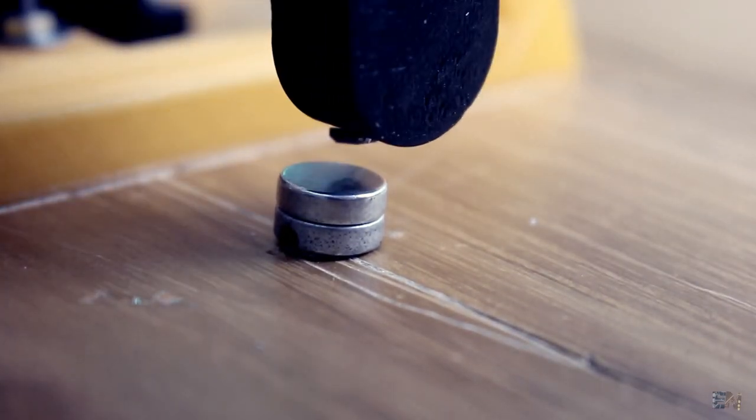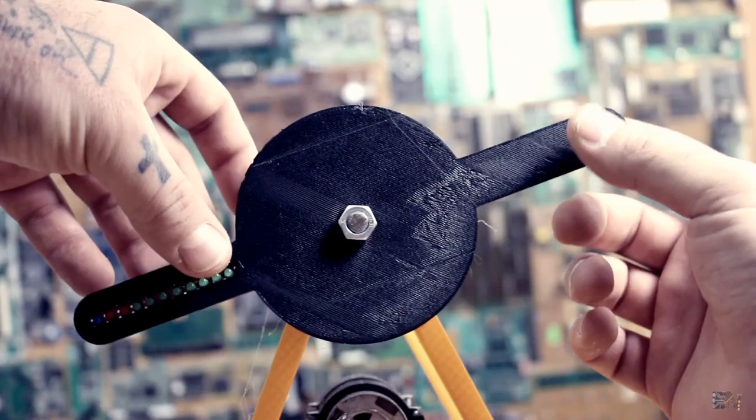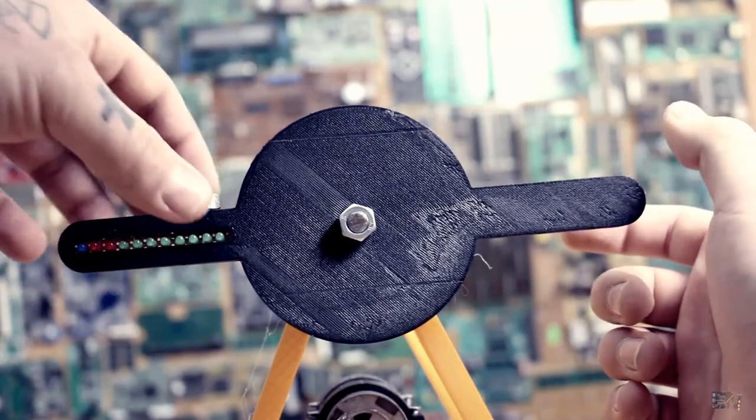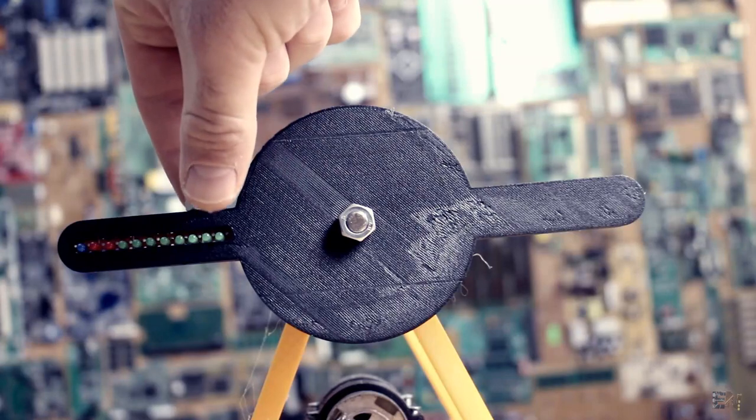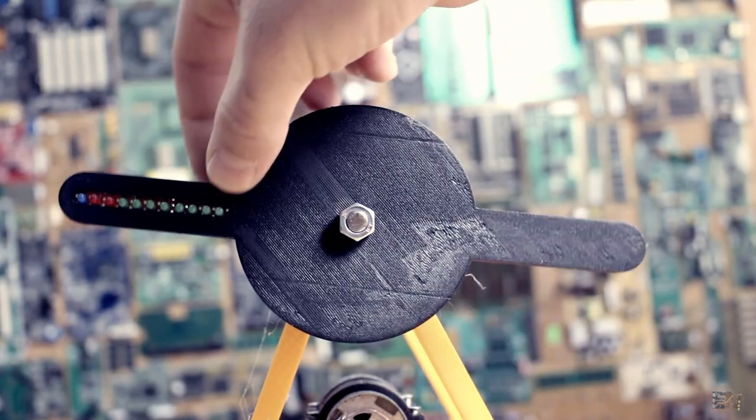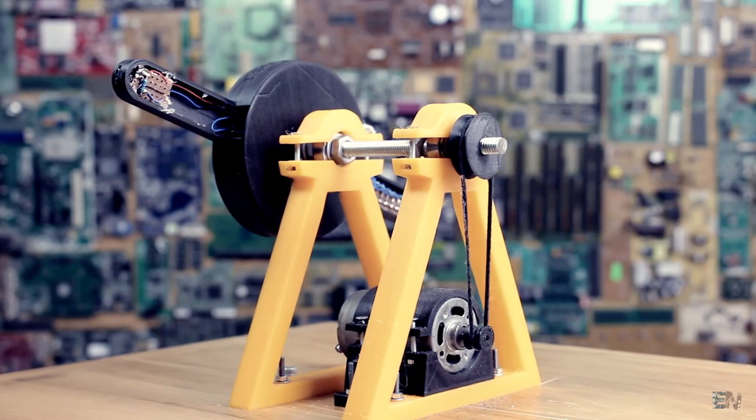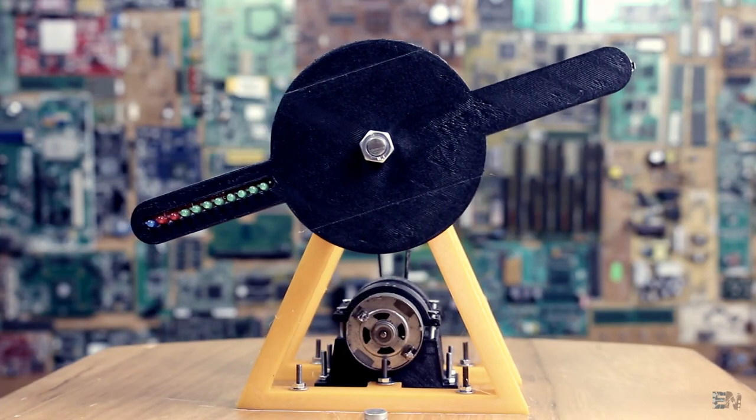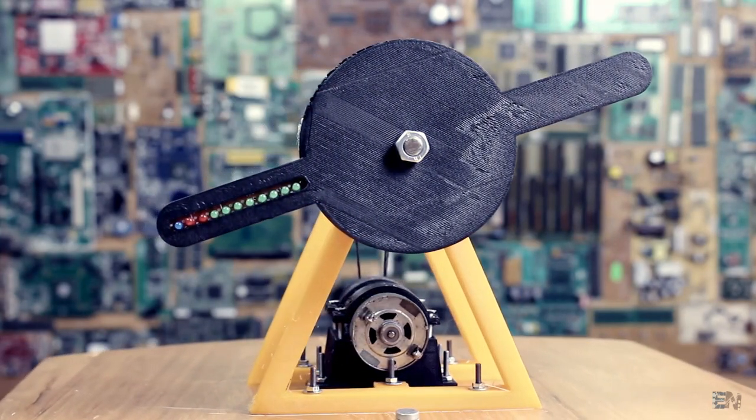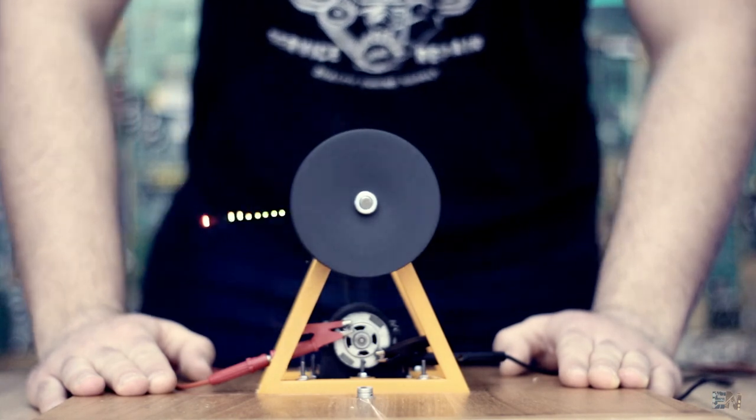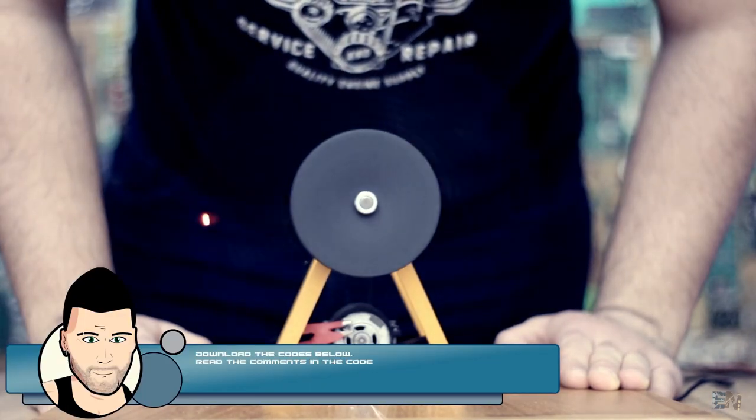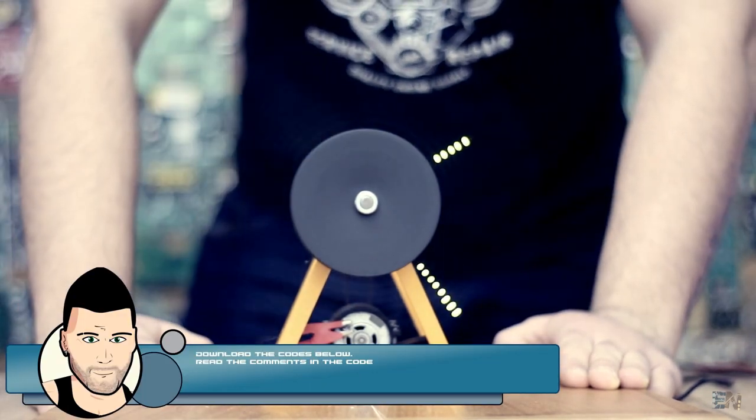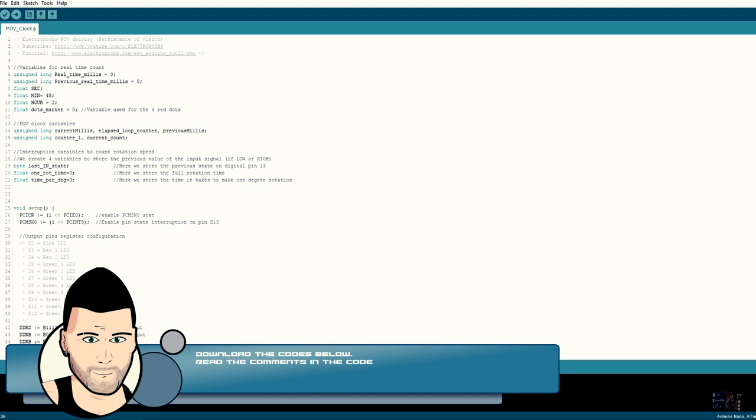Before we look over the code, we have to make sure that the propeller is balanced. Without touching the propeller, it should always be as horizontal as possible. OK, so this is the finished POV clock with the code already uploaded to the Arduino Nano. Now let's look over the code that you could also download from the link below. Make sure you read all the comments in the code in order to understand it.